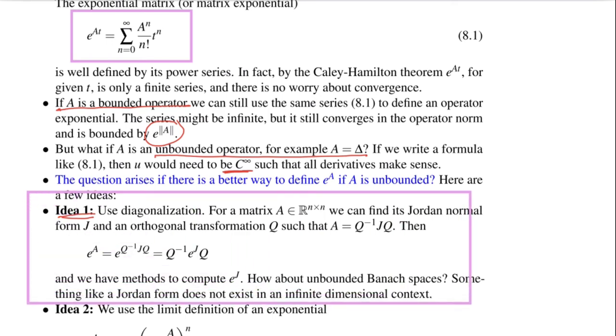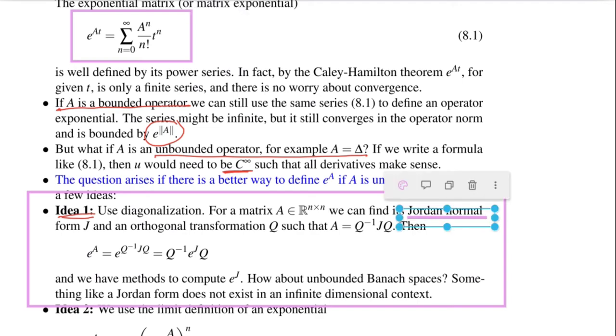Idea one. We could try a diagonalization. If we have a matrix A, we find the Jordan normal form. And then we can transform A to be Q inverse JQ, where Q is an orthogonal transformation matrix. And then e to the A can be computed by Q inverse e to the J Q. And then there are methods to compute the exponential of a Jordan block. But in unbounded Banach spaces, this is not possible. We do not have something like a Jordan normal form in that case.